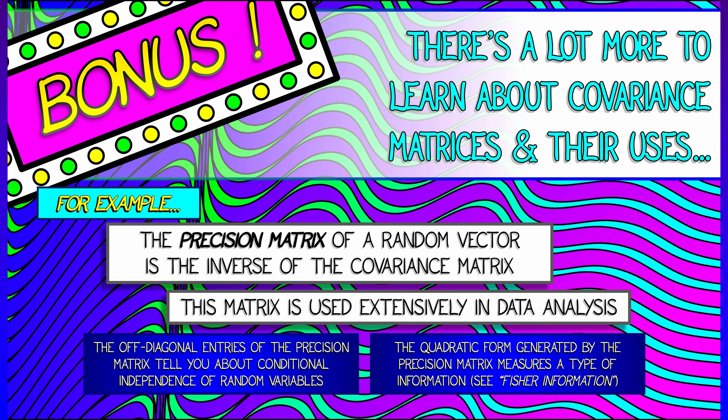And if you use that precision matrix to generate a quadratic form, this is very deeply related to things in information theory, things called Fisher information. And oh, there's so much more for us to learn. But this is, alas, a brief bonus time.